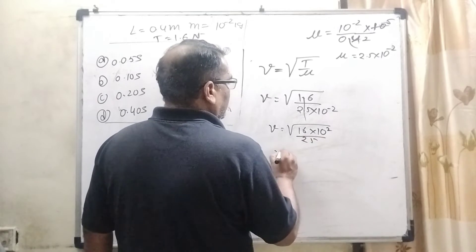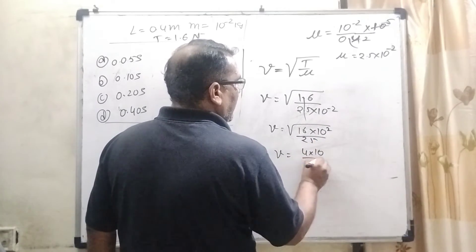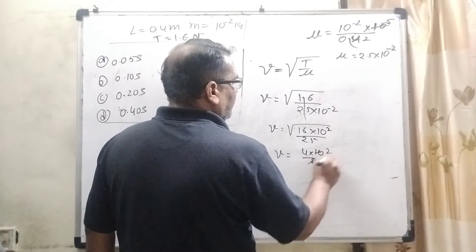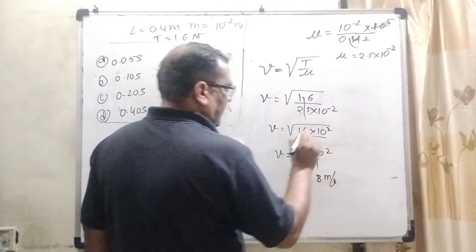This gives us 16 by 25 times 10^2. Then what is the square root of total number? Taking square root, 4, 10, 5. We get V equal to 8 meter per second.